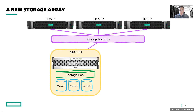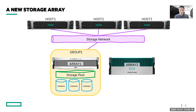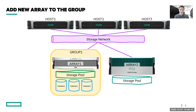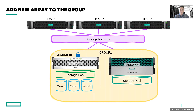Now, what happens when you get a new storage array? You bring the new array — array number two — into your environment. It will also come with its own storage pool, and you will connect it to your storage network so that your hosts have access to it. You can then add that array to your existing group, and the group management access from your storage network, as well as administration, is blanketed over both systems.